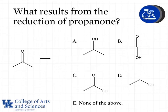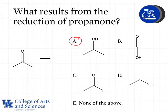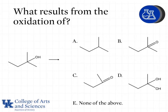What results from the reduction of propanone? When a ketone is reduced, it is reduced to a secondary alcohol, so the answer is A. Notice that B has too many bonds to the central carbon atom. C is the result of an oxidation of an aldehyde, and D shows a primary alcohol, which would result from the reduction of an aldehyde, not a ketone.